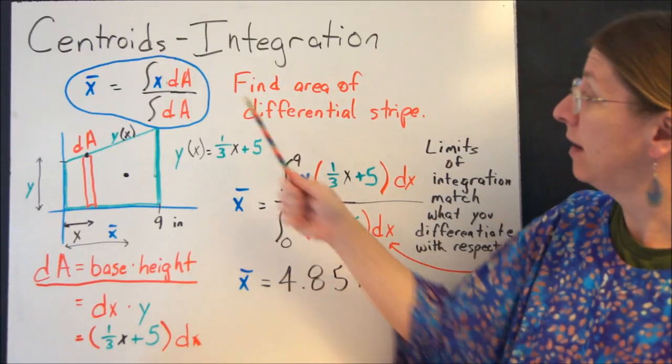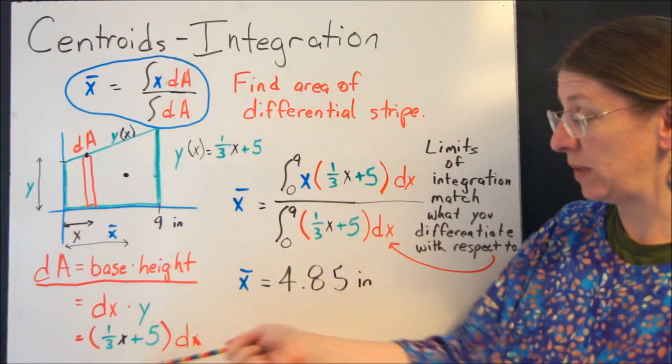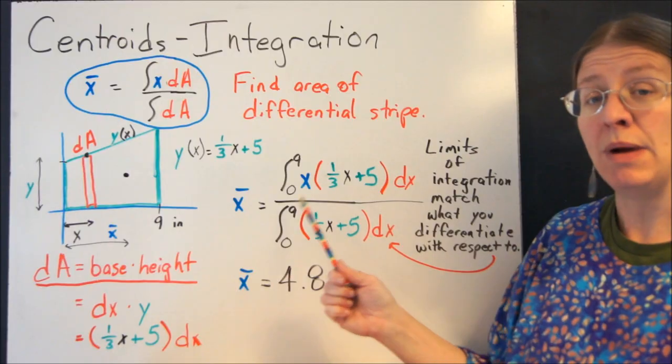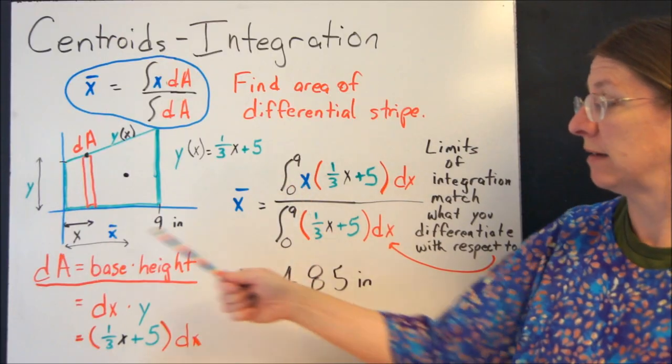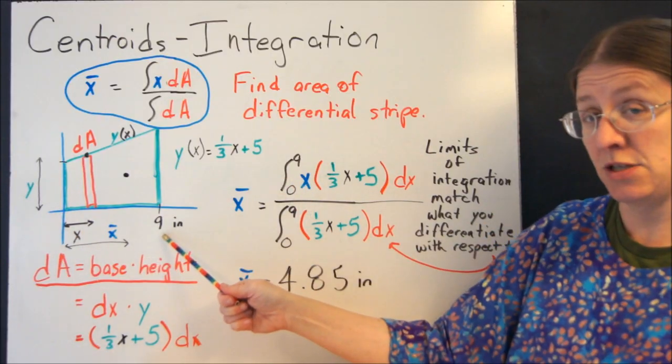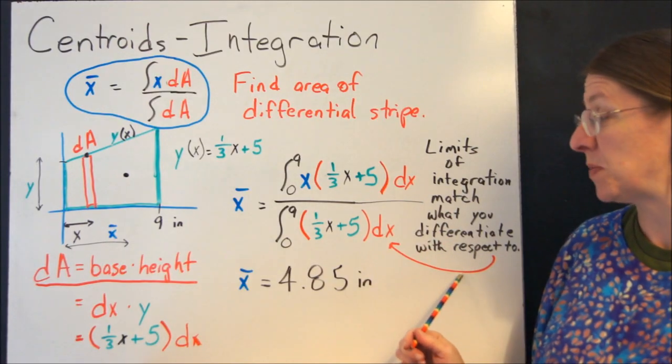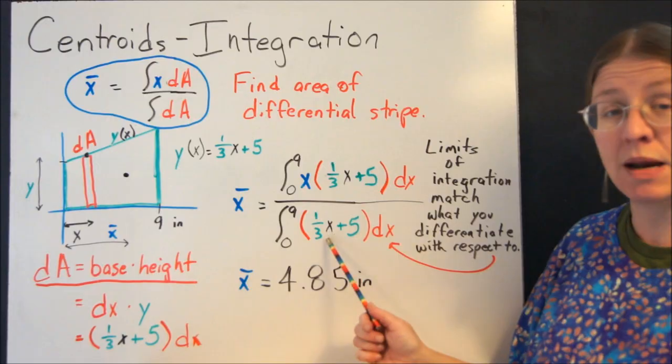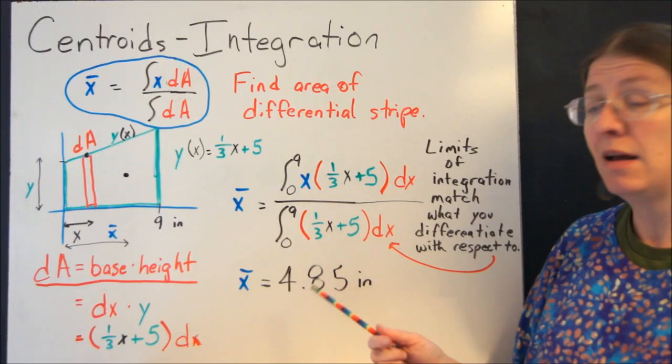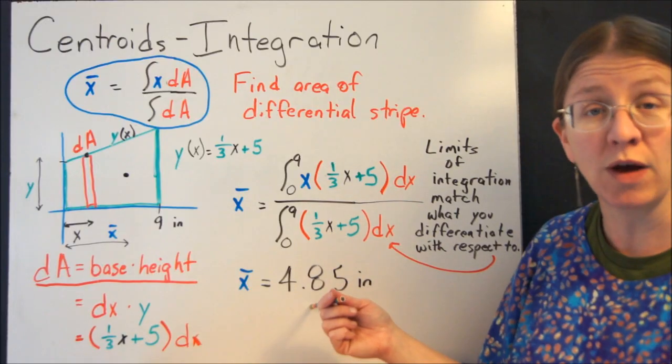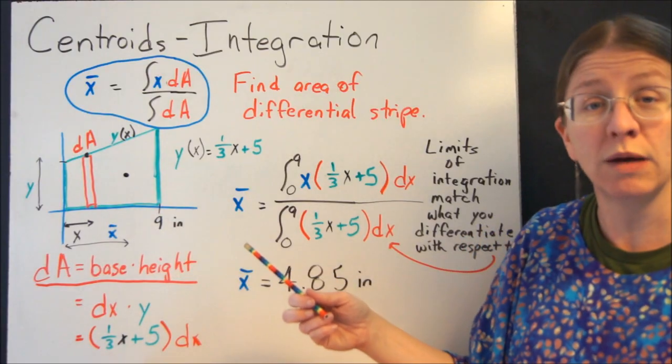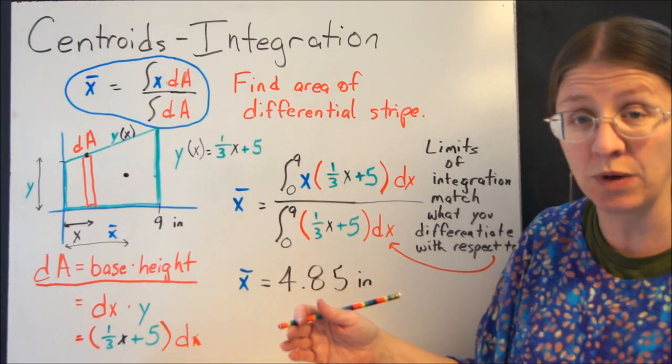So what do we get from the integral? If I take x times dA, there's my dA, plug it in. My limits of integration here are 0 to 9. That's what x is doing. And my limits of integration need to match what my integration is taking with respect to. So that's the top. The bottom is the same except it doesn't have that x in there. And I can evaluate it. I get 4.85 inches. Again, a little bit more than 4.5 over. So that's exactly what I would expect.